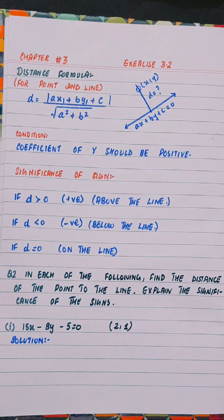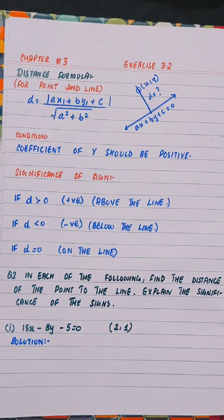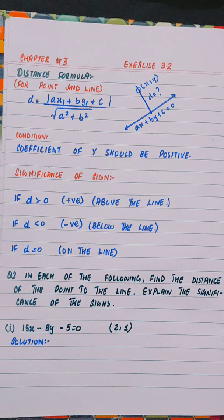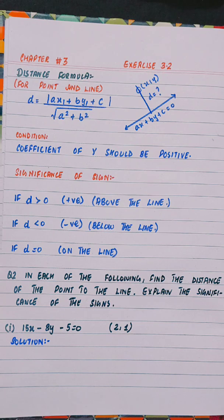Hello everyone, this is Rabia Aslam. Today we will start the distance formula when we have given a point and a line. This formula is called the perpendicular distance formula.